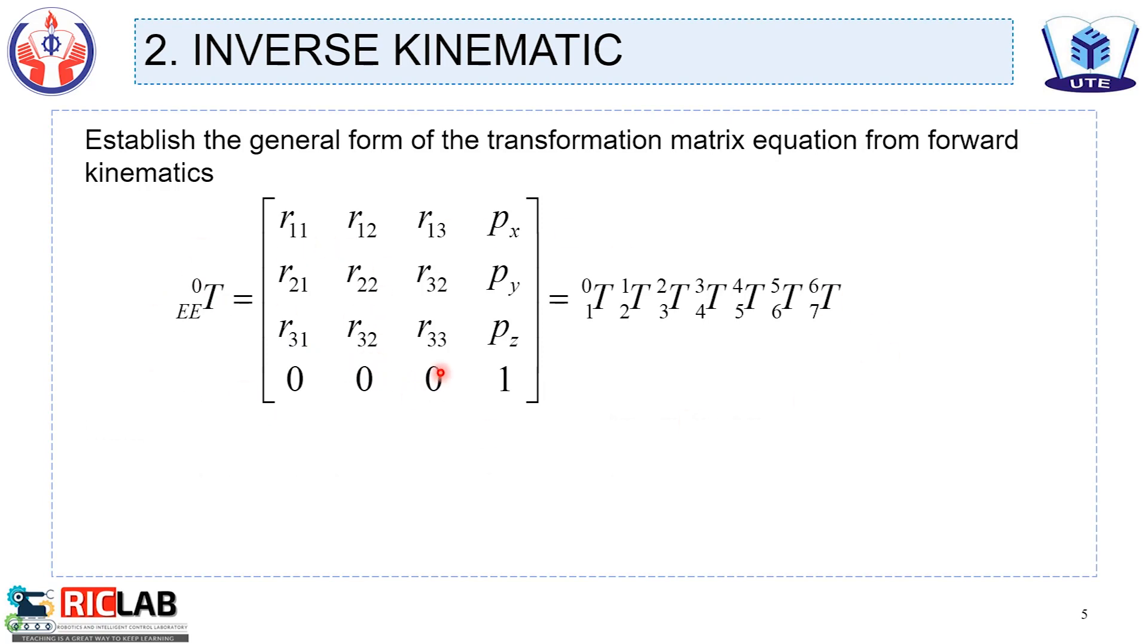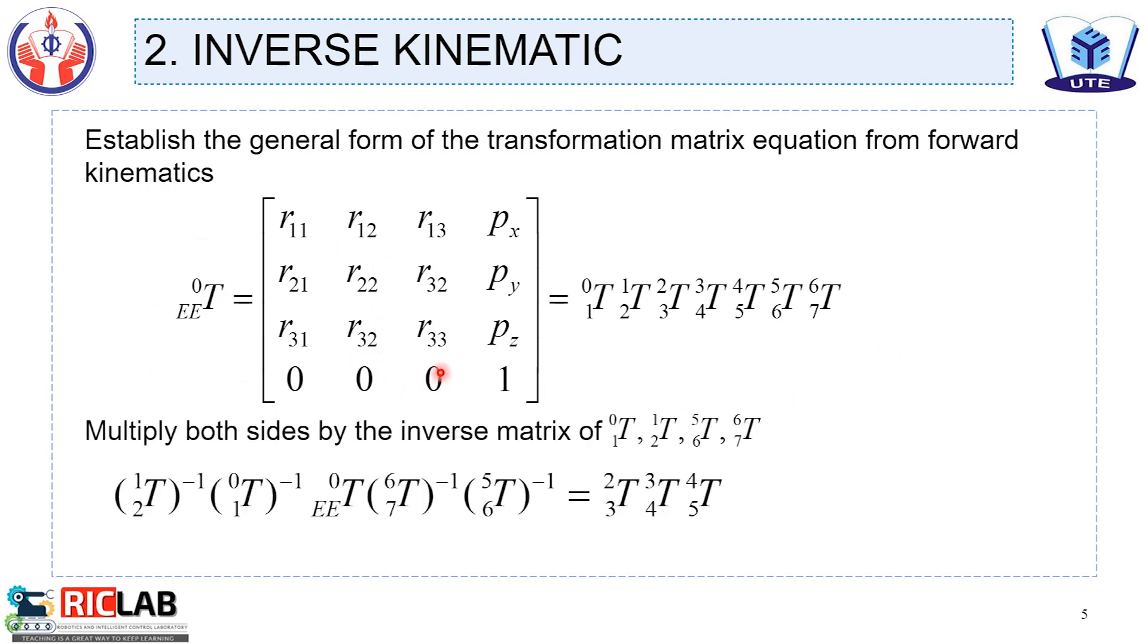We multiply both sides by the inverse matrix of Denavit-Hartenberg. After that, we get the equation like that.